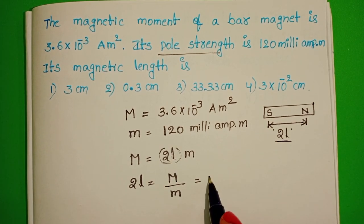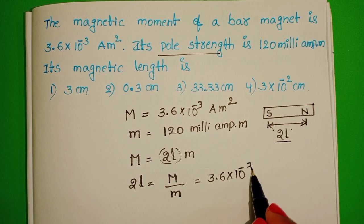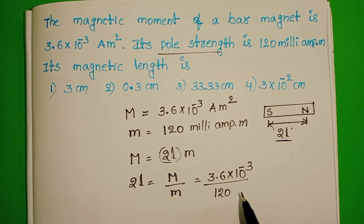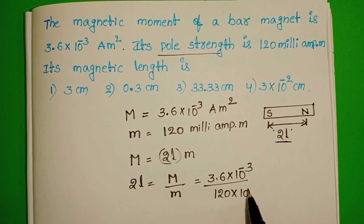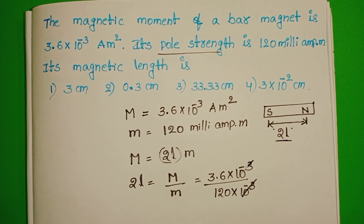In place of magnetic moment substitute 3.6 × 10⁻³. Pole strength is 120 milliampere meter. Milli is 10⁻³. 10⁻³ gets cancelled.